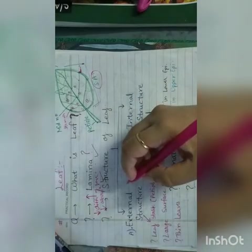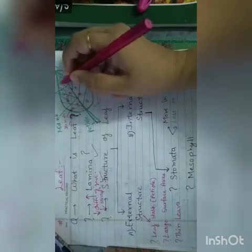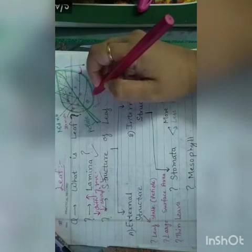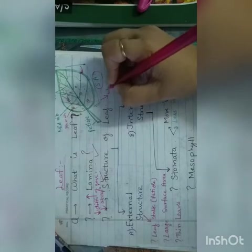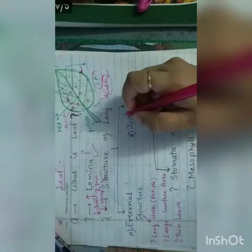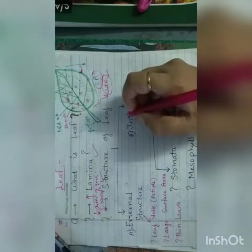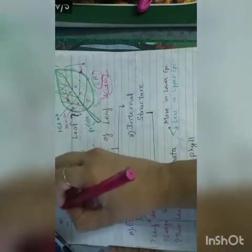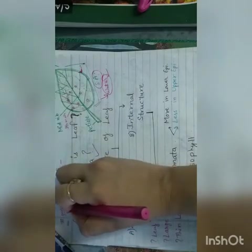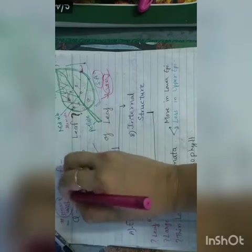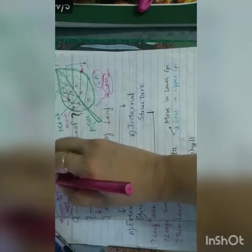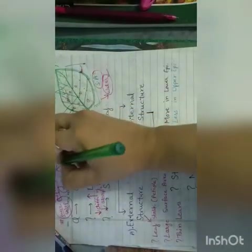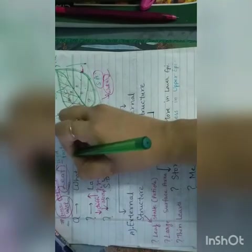If the surface area or lamina is large, then more diffusion of gases and more absorption of sunlight. If it is short, then diffusion of gases will reduce and there will be less absorption of sunlight. Lamina has good supply of veins. Lamina has a lot of water, the raw material.